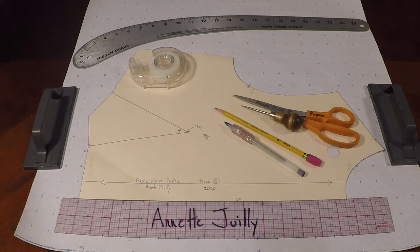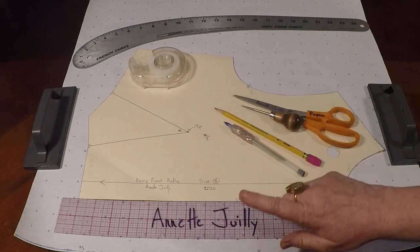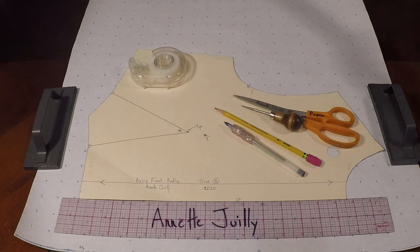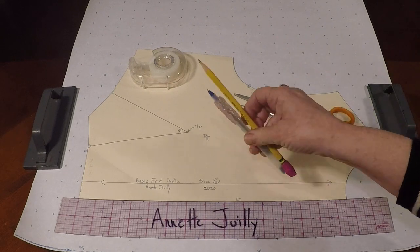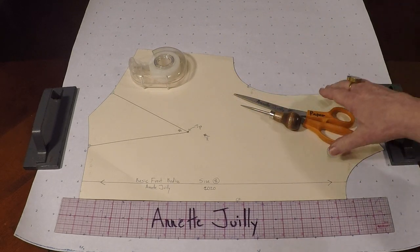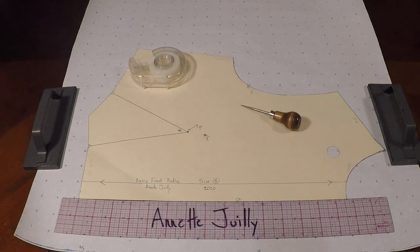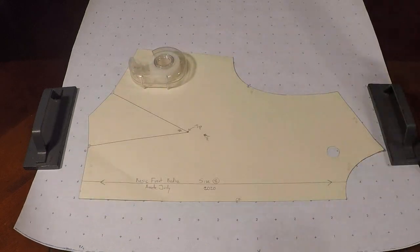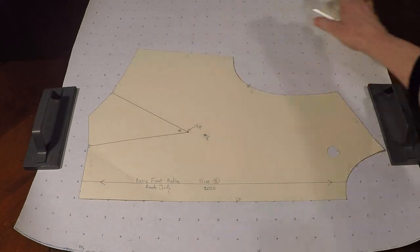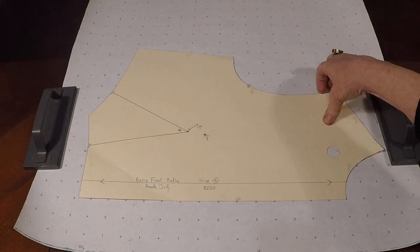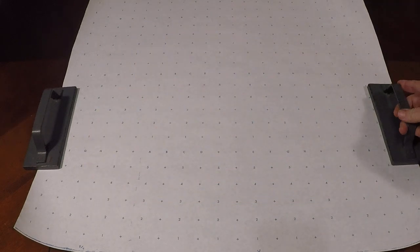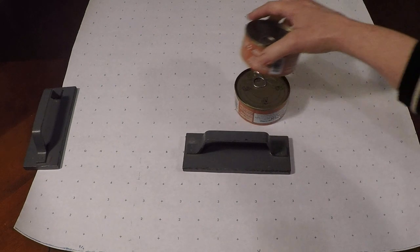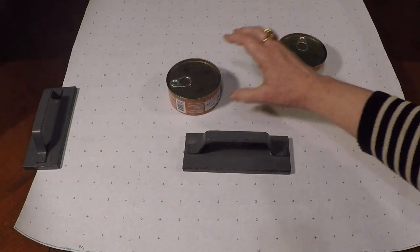You're also going to need some pattern paper, a straight ruler, pencil, a pen, your paper scissors, an awl or you can use your pen - I'll show you a trick. Got your pattern ruler there, and you can also use pattern weights, but if you don't have them, some little cans work just fine as well.